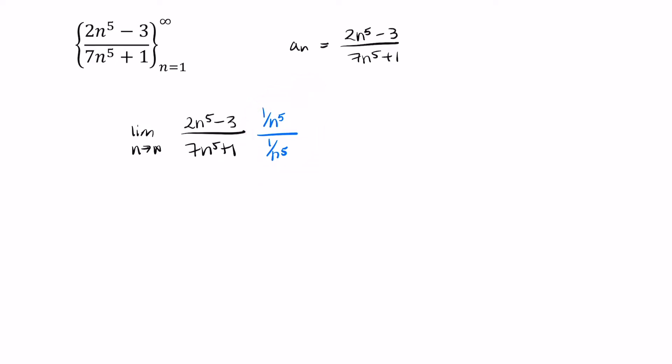Now use care here. You do need to distribute this, that is multiply 1 divided by n to the fifth, multiply it by 2 times n to the fifth. So what does that look like? Well, let's write down our limit notation first. Don't ignore that.